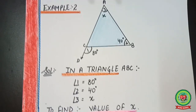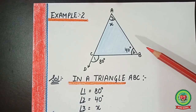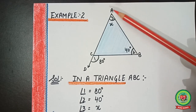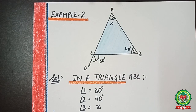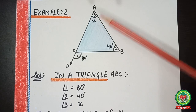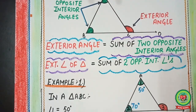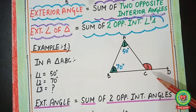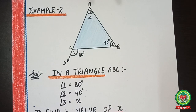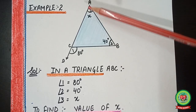Now let's take example number two. Here we have a triangle and line AC has been extended to point D. Two angles are given: angle one and angle two. The interior angle X is not given. This time, unlike example one where we found the exterior angle, here the exterior angle is given and we need to find the missing interior angle X.